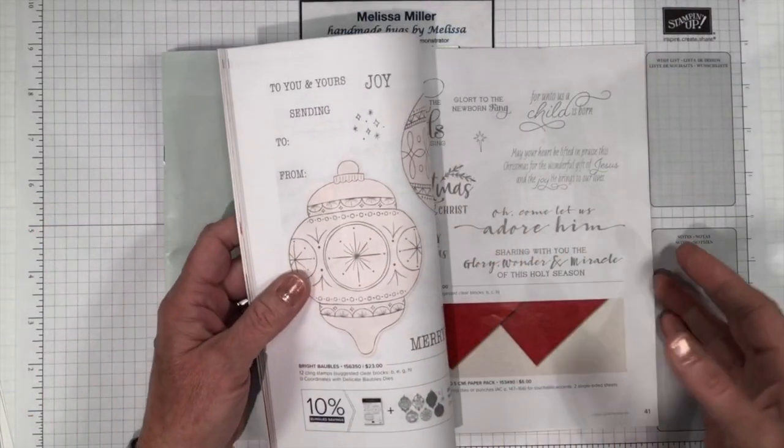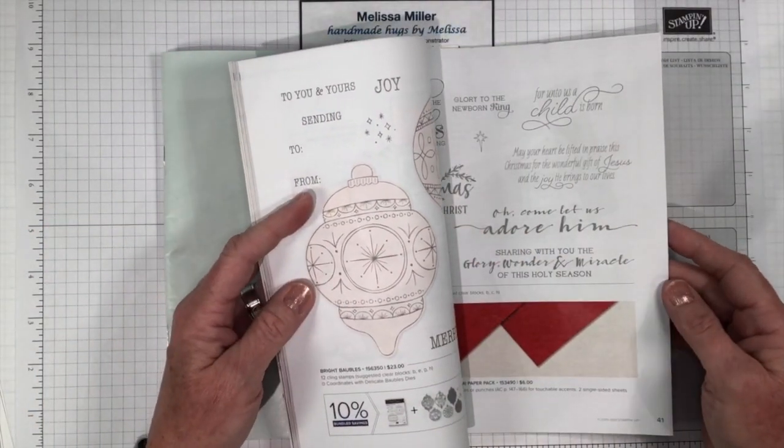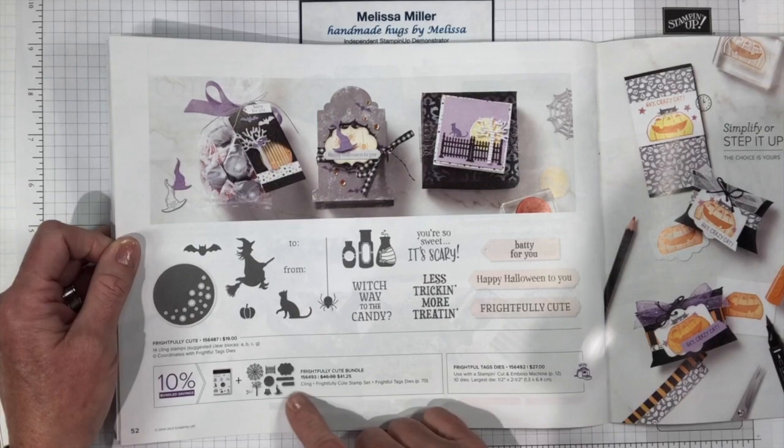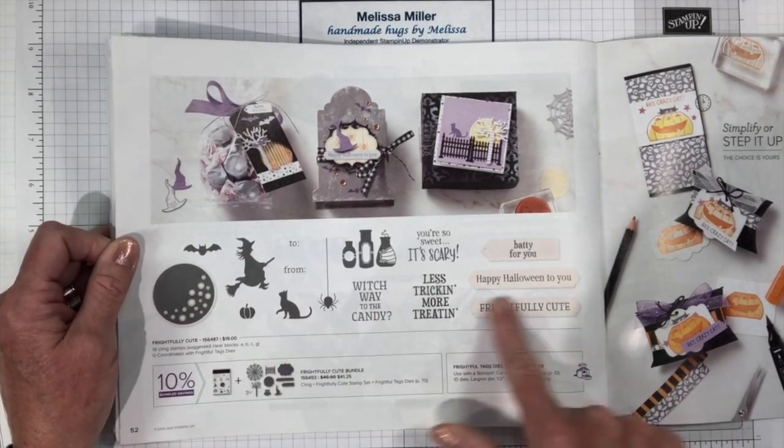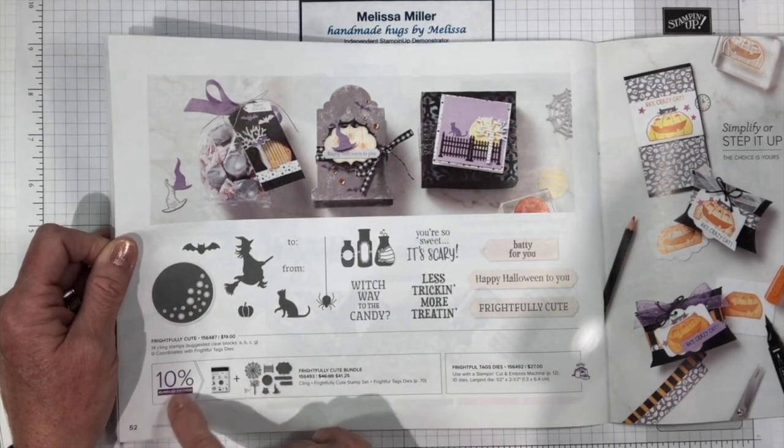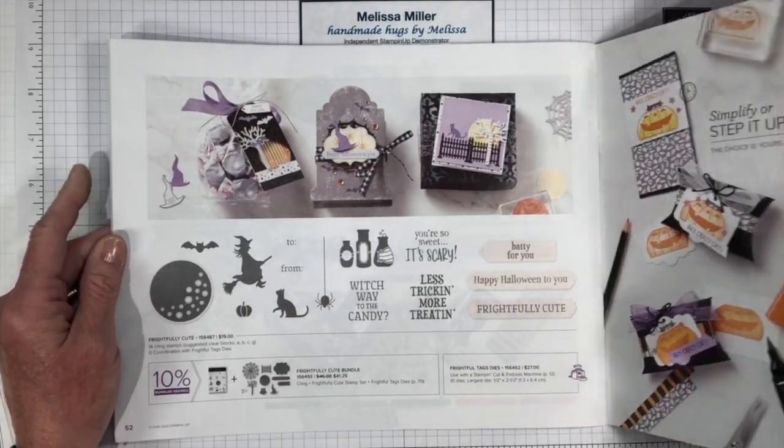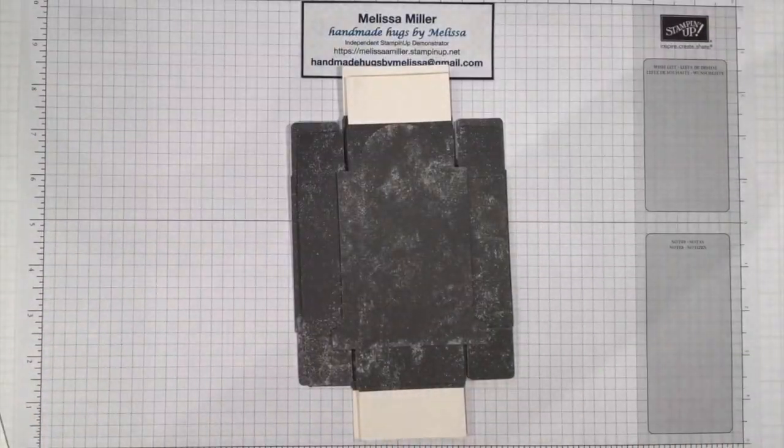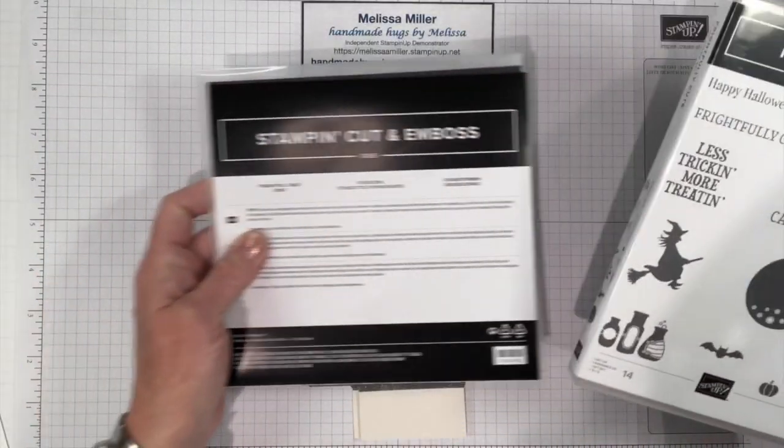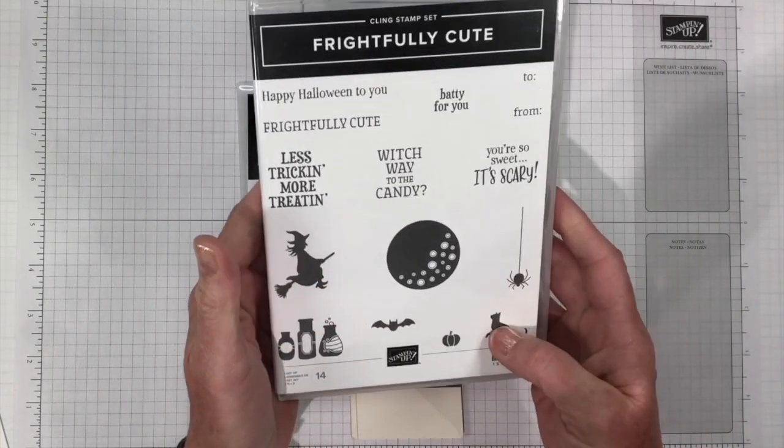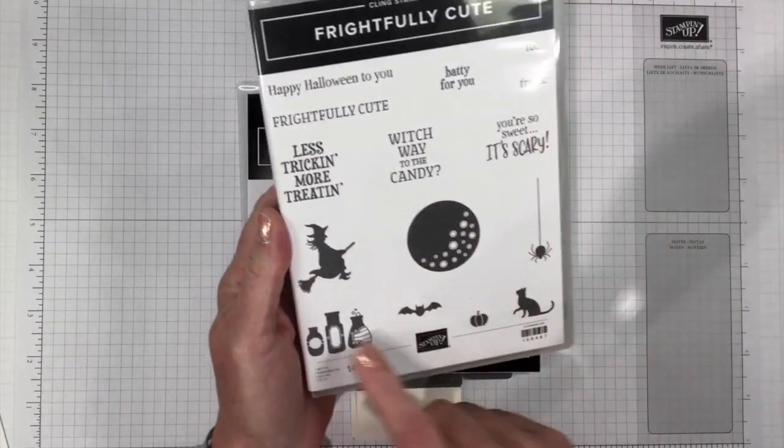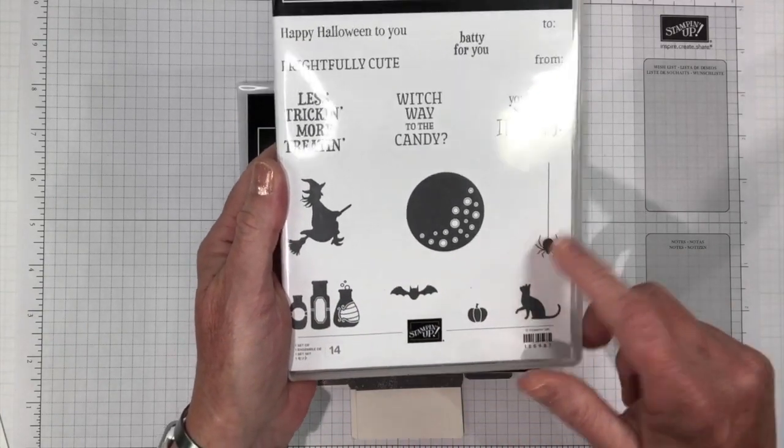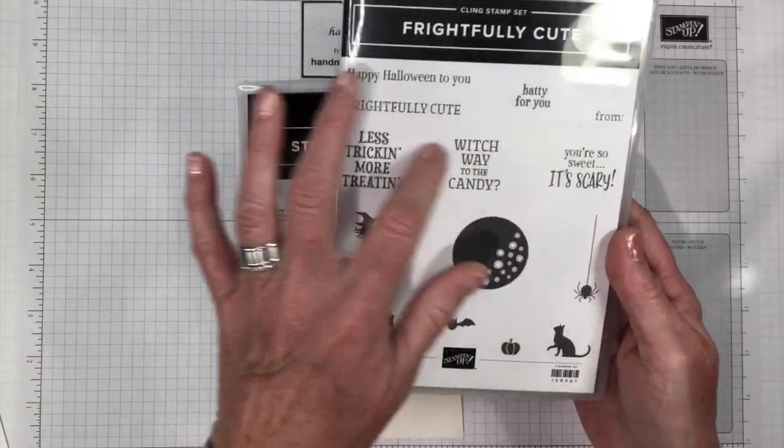The stamp set that we will be using is Frightfully Cute on page 52 of this catalog. If you purchase the bundle you get the stamp set and the dies and you get 10% off, but you don't have to purchase them as a bundle. The stamp set has our witch, our cat, our moon, our bat, some little bottles of poison with bubbles, a spider, and a bunch of really cute sentiments.